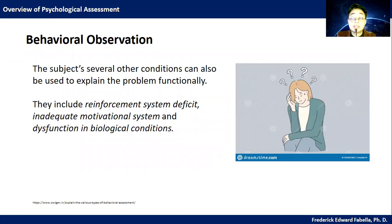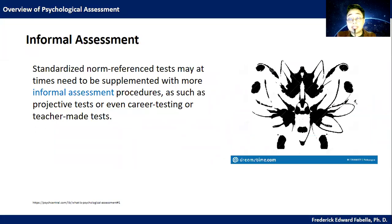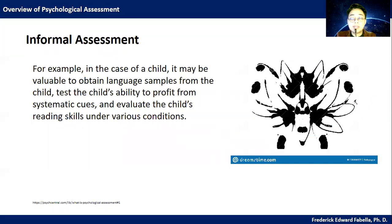The subject's several other conditions can also be used to explain the problem functionally. They include reinforcement system deficit, inadequate motivational system, and dysfunction in biological conditions. These are all the things you observe in behavioral observation. Standardized norm-referenced tests may at times need to be supplemented with more informal assessment procedures, such as projective tests, career testing, or teacher-made tests. For example, in the case of a child, it may be valuable to obtain language samples from the child, test a child's ability to profit from systematic cues, and evaluate the child's reading skills under various conditions.